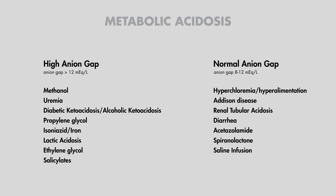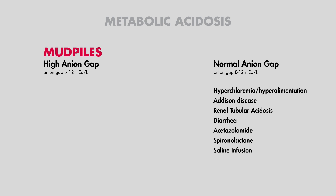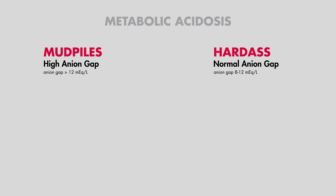The mnemonics to remember these are 'MUD PILES' for causes of high anion gap metabolic acidosis, and 'HARD ASS' for causes of normal anion gap metabolic acidosis. These cover the majority of cases, at least those commonly seen on tests and exams.